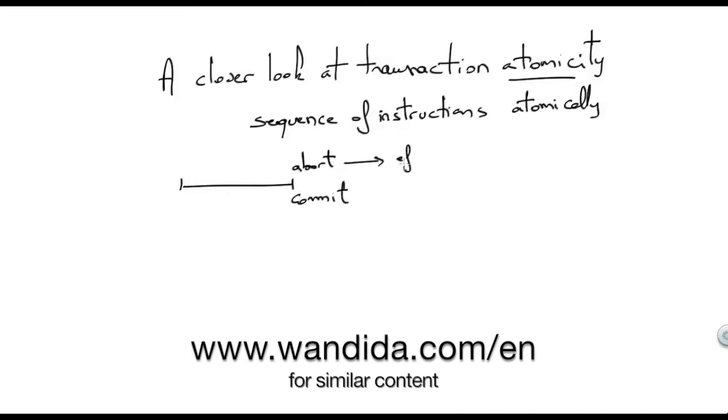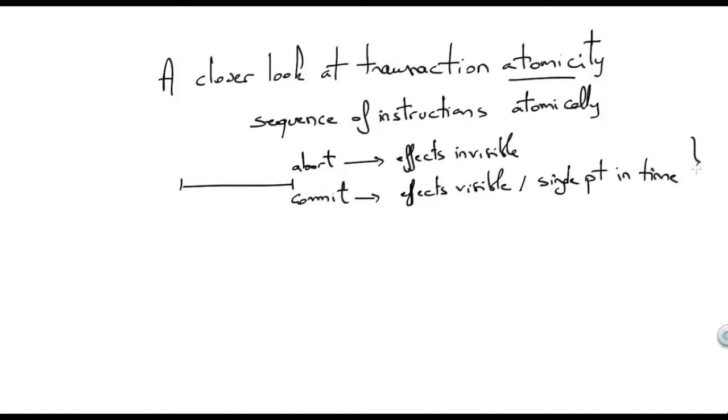If it aborts, its effects are made invisible. If it commits, its effects are made visible, and everything happens as if it was executed at a single point in time. The combination of these two properties is what is called atomicity.